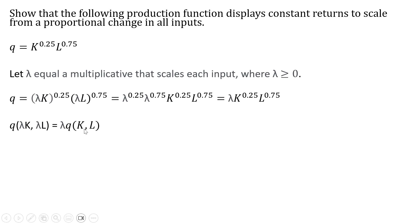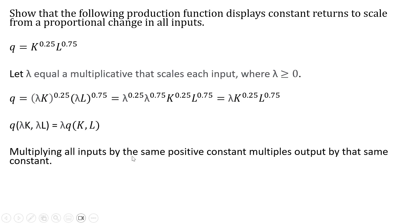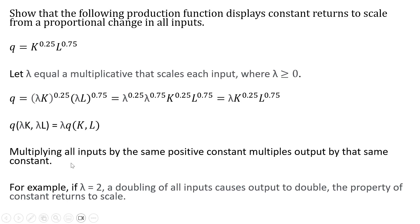And so once again, we're showing this property of constant returns to scale. For example, if lambda equals 2, a doubling of all inputs causes output to double — the property of constant returns to scale.